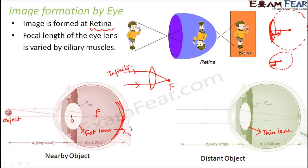If we are able to make the lens thinner, its focal length will increase. So earlier the focal length was somewhere here, but now the focal length increased and the focus shifted further out. The parallel rays of light coming from an object which is far away, after passing through the lens, met at the focus — and that focus is now on the retina. So the image is formed on the retina. If we are able to change the thickness of the lens, we can ensure that whether the object is near or far away, we will always get the image on the retina.